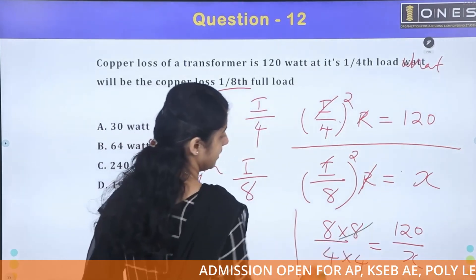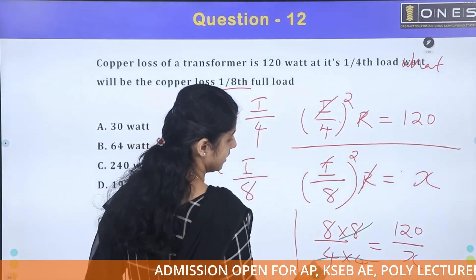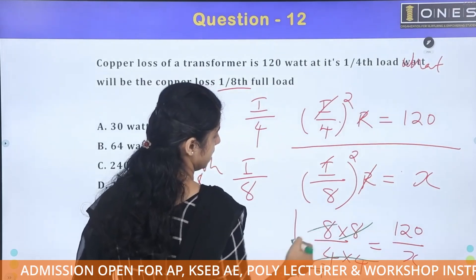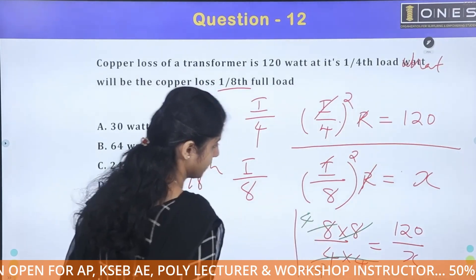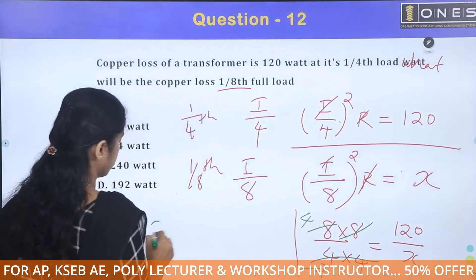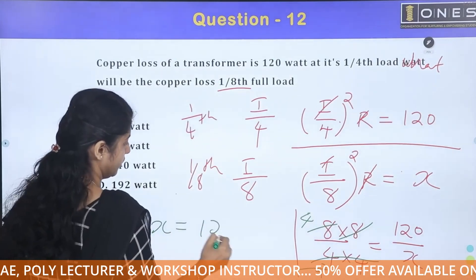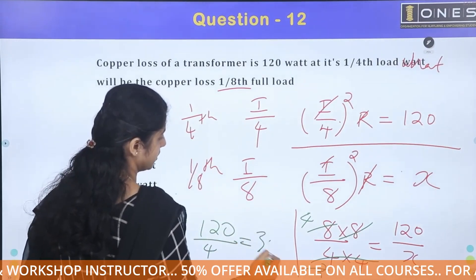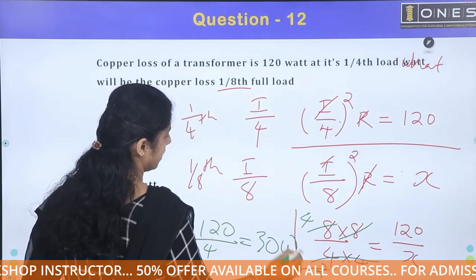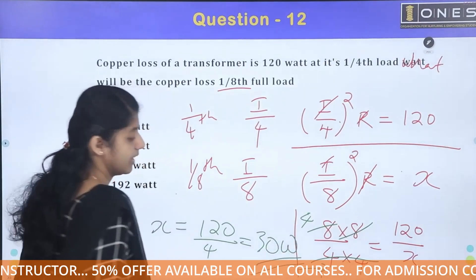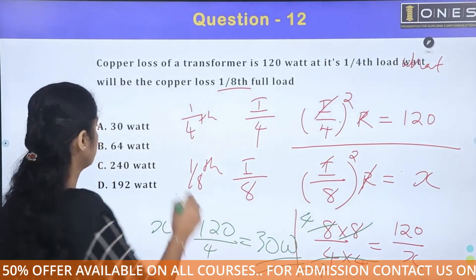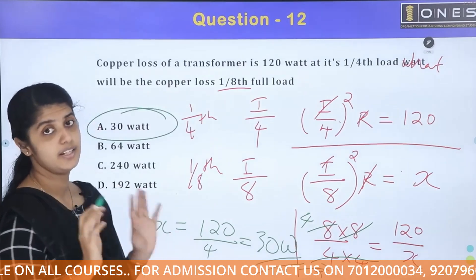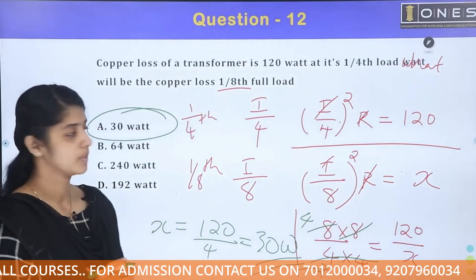Cancelling and simplifying: x = 120 / 4 = 30 watts. Therefore, the copper loss at 1/8 load is 30 watts. The first option is correct — 30 watts.